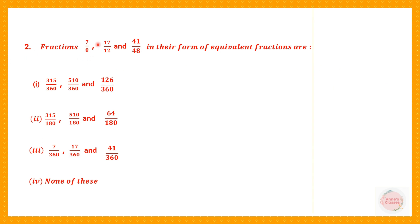Question 2. Fractions 7/8, 17/12, and 41/48 in their form of equivalent fractions are one of the given options. Equivalent fractions means when you multiply the numerator and denominator by the same number, the fractions you get are called equivalent fractions. Since these are all big numbers, we reduce them to the lowest term to check which option matches.